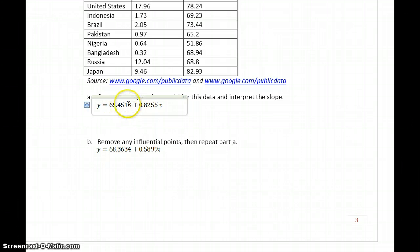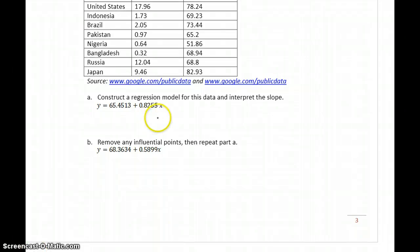So, the other thing we want to look at now is the original model and our updated model with that influential point removed. So, let's start with the data value that we do know. We know that in the United States, our CO2 emissions are 17.96 metric tons. So, we'll plug that value in to get a predicted value, which we can compare with our known value. So, if we plug 17.96 into the original model, we get a predicted value of 80.277. If we plug it into our updated model with that influential point removed, we get a predicted value of 78.958.